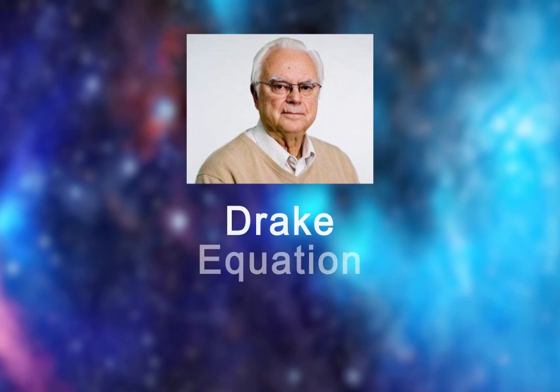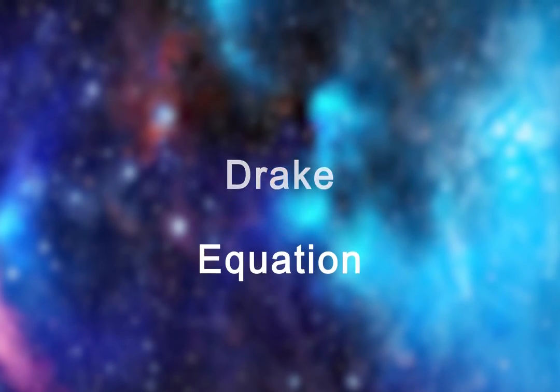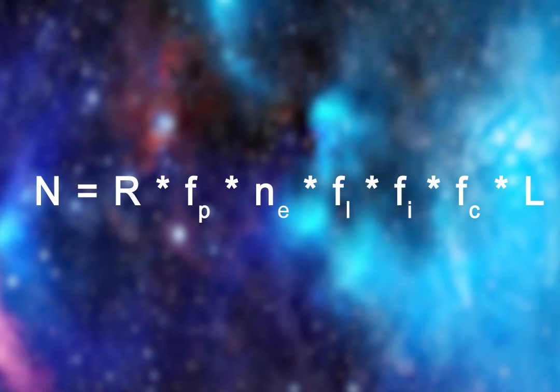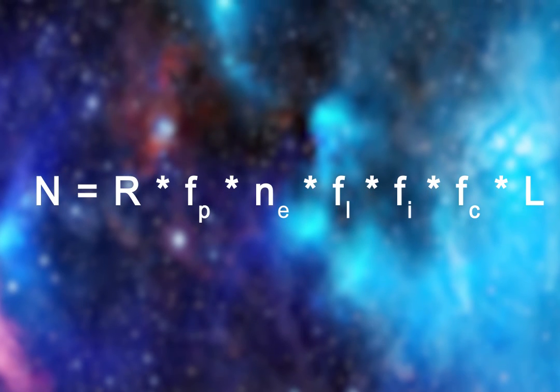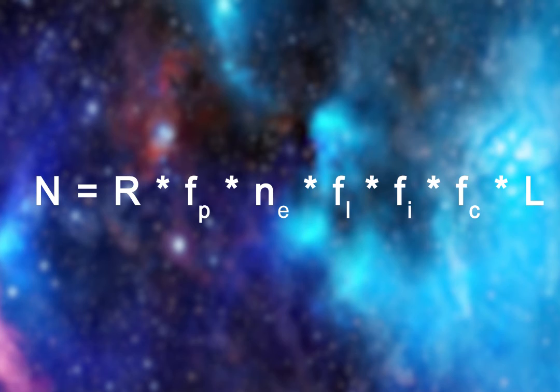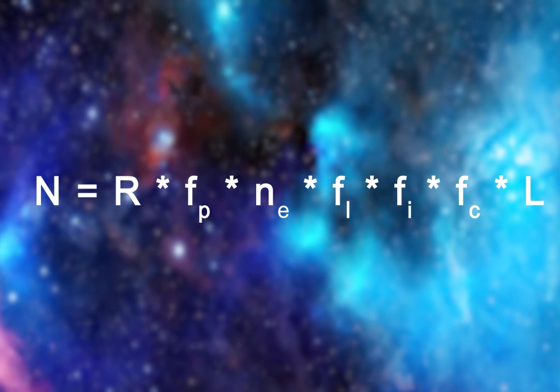In 1961, Frank Drake formulated the Drake Equation. The equation is a series of seven values that calculate the number of other civilizations that we can contact. The number derived from the equation is the number of advanced lifeforms waiting to be found in our galaxy.